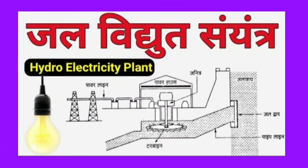When this water falls on the turbines, it gains kinetic energy. The turbines rotate and produce electricity. This is called hydroelectric power. This electricity is used in our homes for various light appliances.